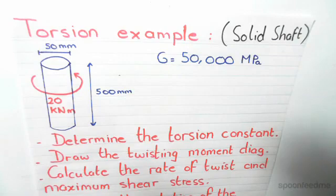The following video presents an example of torsion in a solid shaft undergoing a uniform applied moment. We have a circular cylinder with a diameter of 50mm and a height of 500mm, undergoing a moment of 20kNm, an anti-clockwise moment.